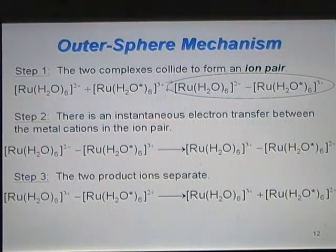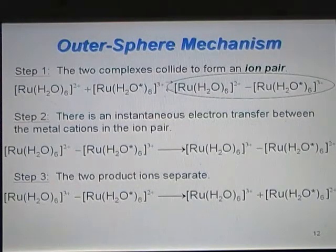Much like the substitution reaction, where we talked about its mechanism, we now need to go through the steps for an outer sphere mechanism. In the first step, the two complexes in the reactants must collide to form an ion pair. The ion pair is held together very weakly, and it's a short-lived complex.